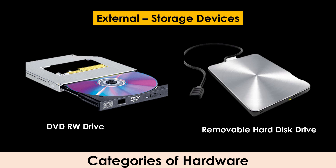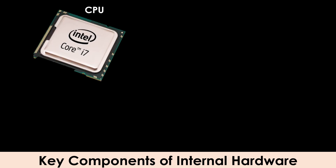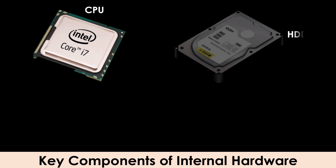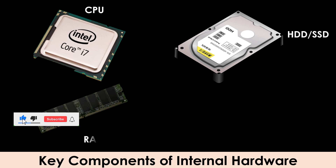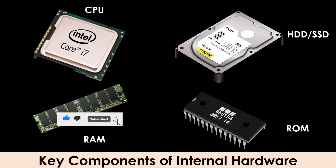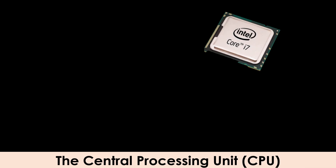Further details on each of the external hardware devices will be discussed later in this series. For now, we shall be focusing on the internal hardware devices. The key components of internal hardware are the CPU, internal hard drive, RAM, and ROM.